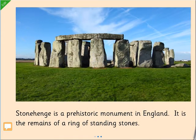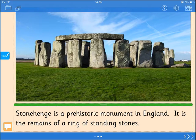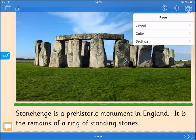With ClickerBooks, you can choose the layout of the objects on the page. Tap to get to edit view, and then tap the page icon and select layout.